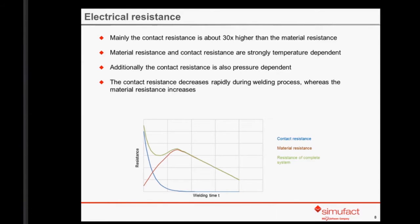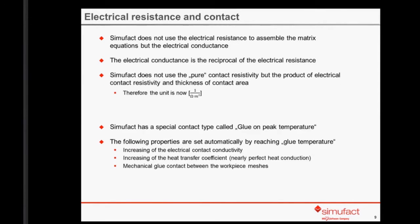SimuFact Welding does not use the electrical resistance to assemble the matrix equation, but the electrical conductivity, which is the reciprocal of the electrical resistance. Furthermore, for constant or temperature-dependent electrical contact conductivity, SimuFact Welding does not use the pure contact conductivity, but the product of contact conductivity times thickness of the contact area. In case the Bay-Wanheim equation is used, the user only has to provide the thickness of the contact area, which is called film thickness.